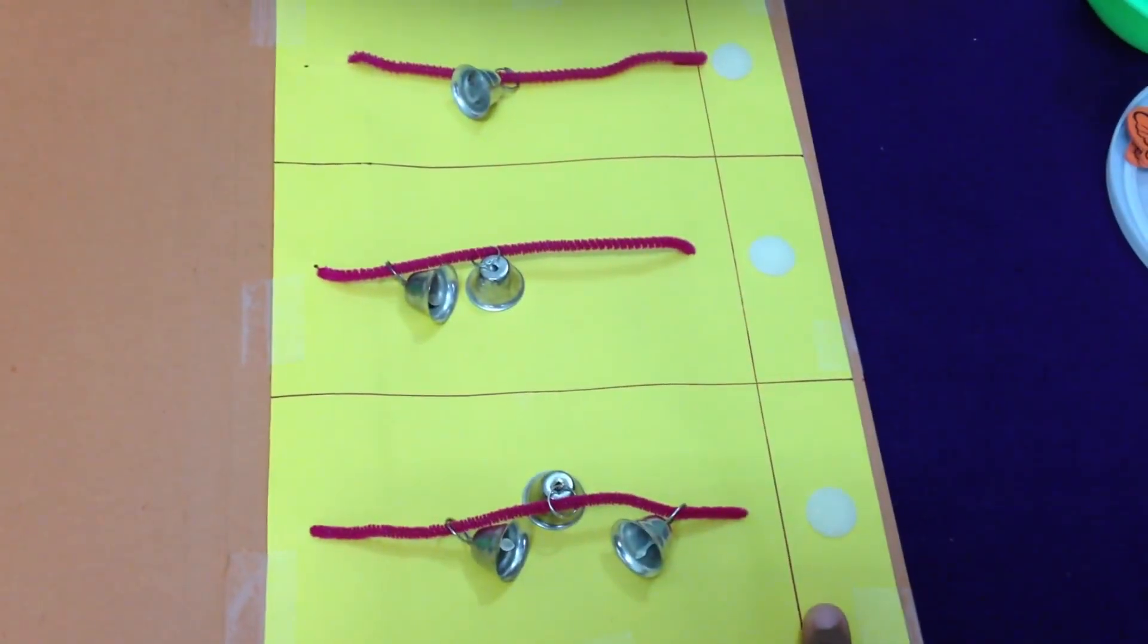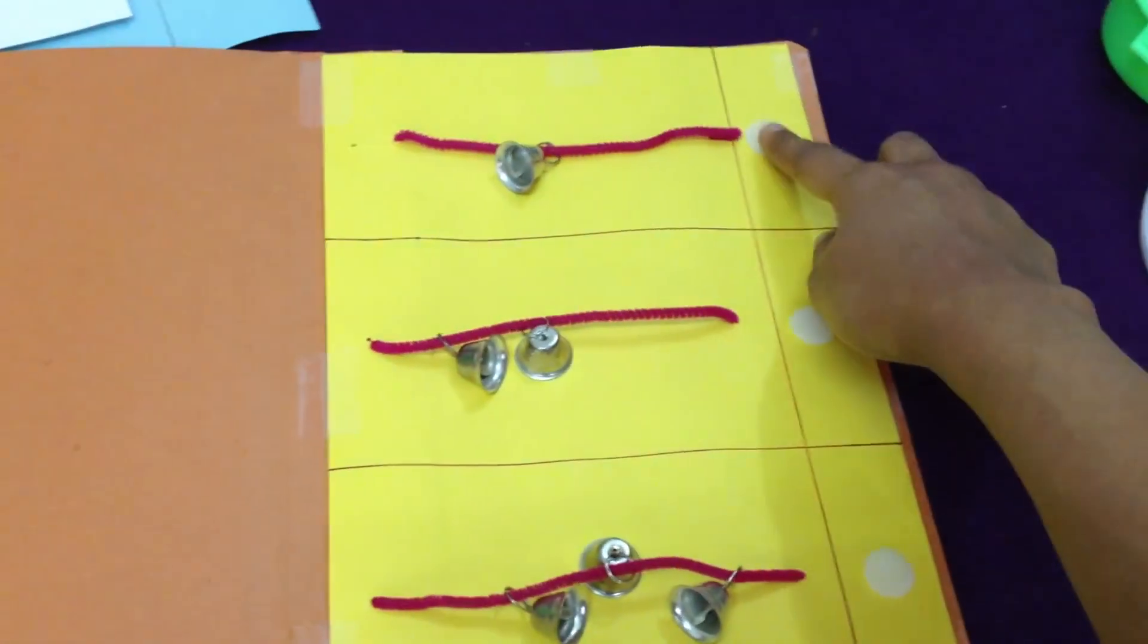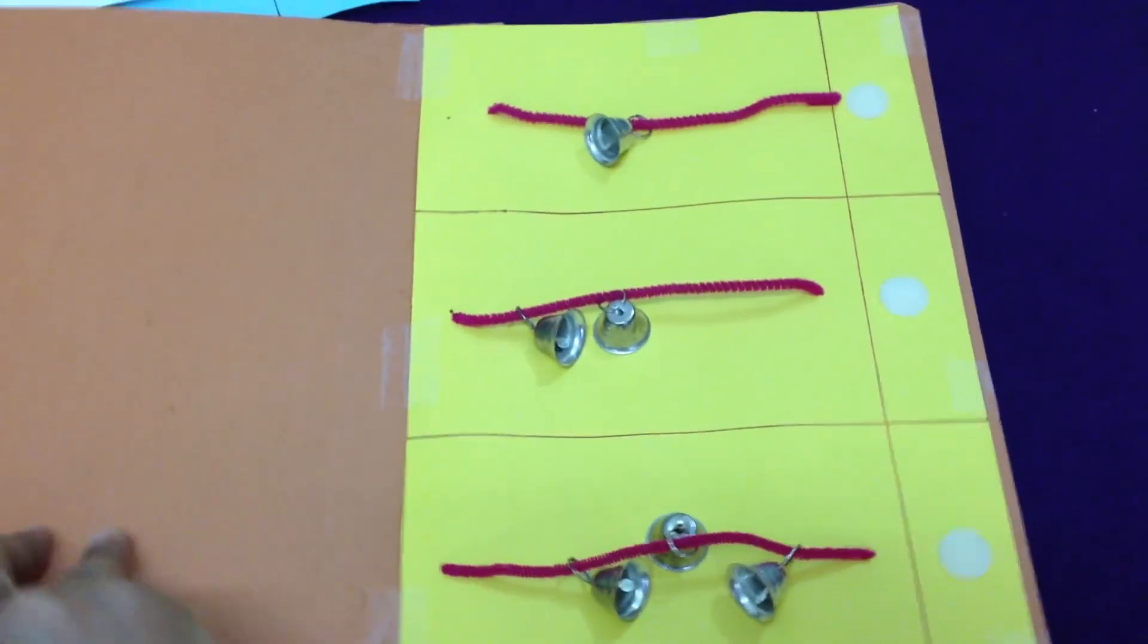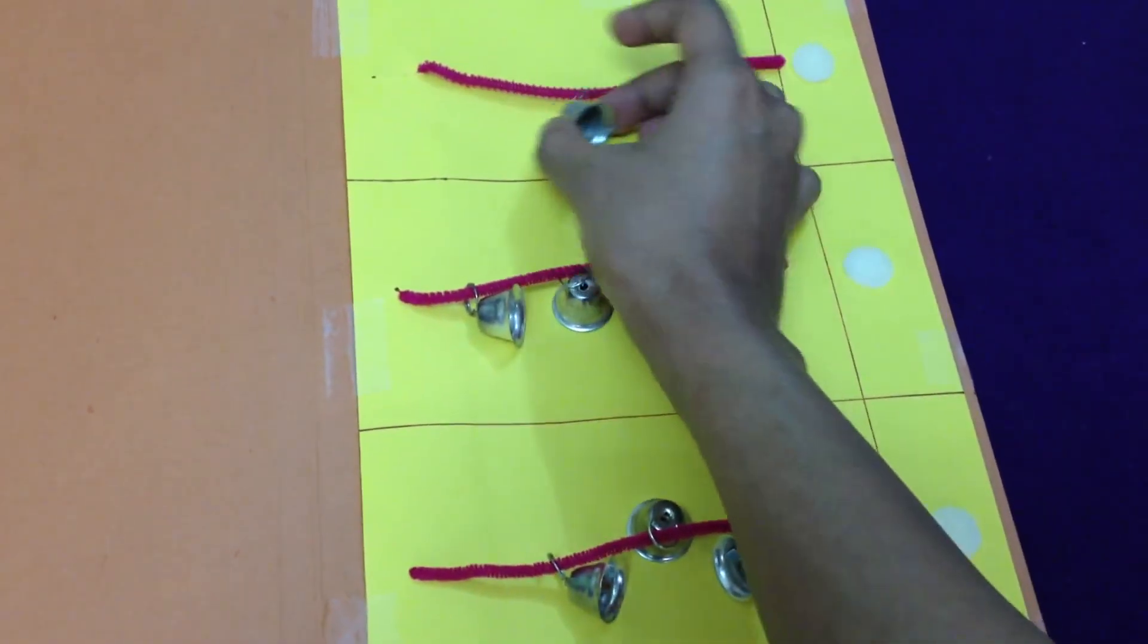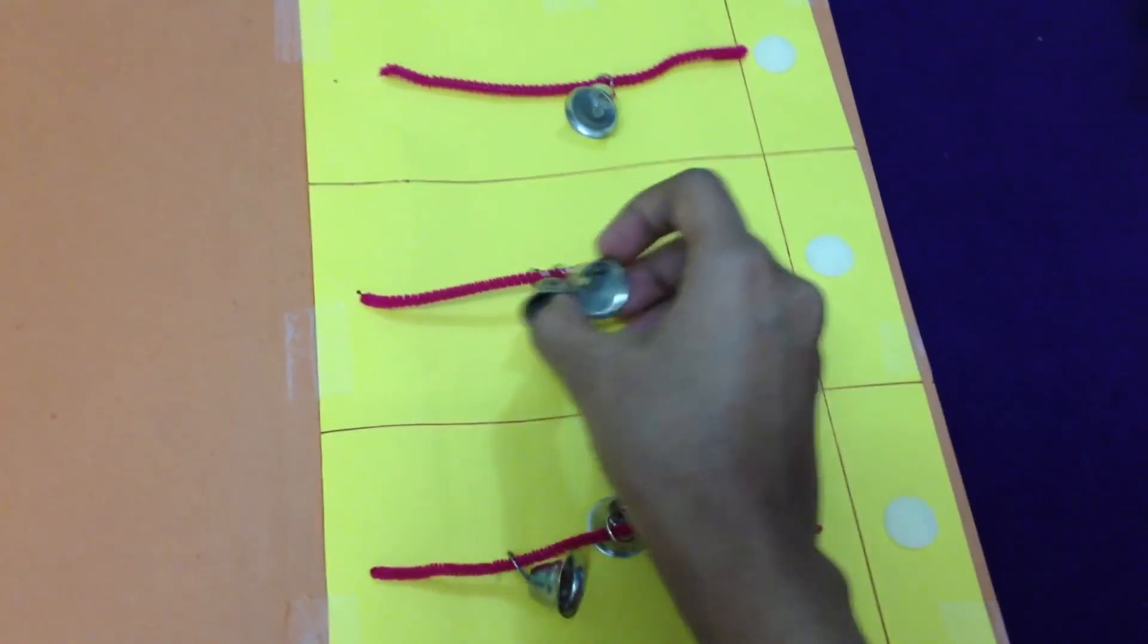You can increase the number based on your toddler's understanding level. You can make a file folder game of one to five or one to ten depending on your kid. This file folder game is about bells. I have inserted these bells in the pipe cleaners.